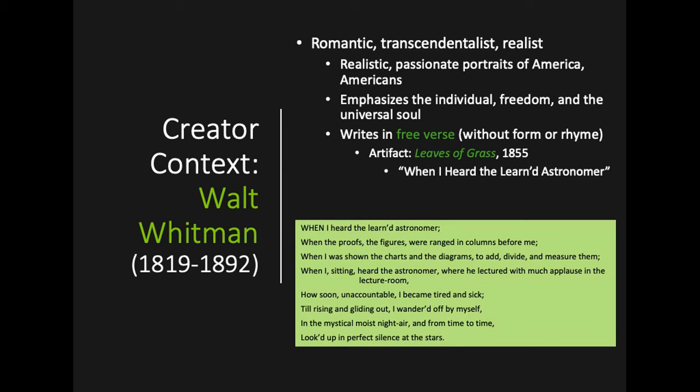Whitman was born to a working-class family in Brooklyn, so he was familiar with the bustling industrial complex that the city became. He held a number of jobs — printer, teacher, journalist, nurse, and government clerk — and in each he was able to experience something more of America. His book of poetry, Leaves of Grass, was first published in 1855, and Whitman both designed the volume and paid for the printing. In it, his poetry reaches out to the common person, writing about all walks of American life and creating portraits of all the life he sees. His work was realistic — he didn't polish the life he witnessed as he traversed America — but his work is also passionate; he adores America and is excited about the country's future.